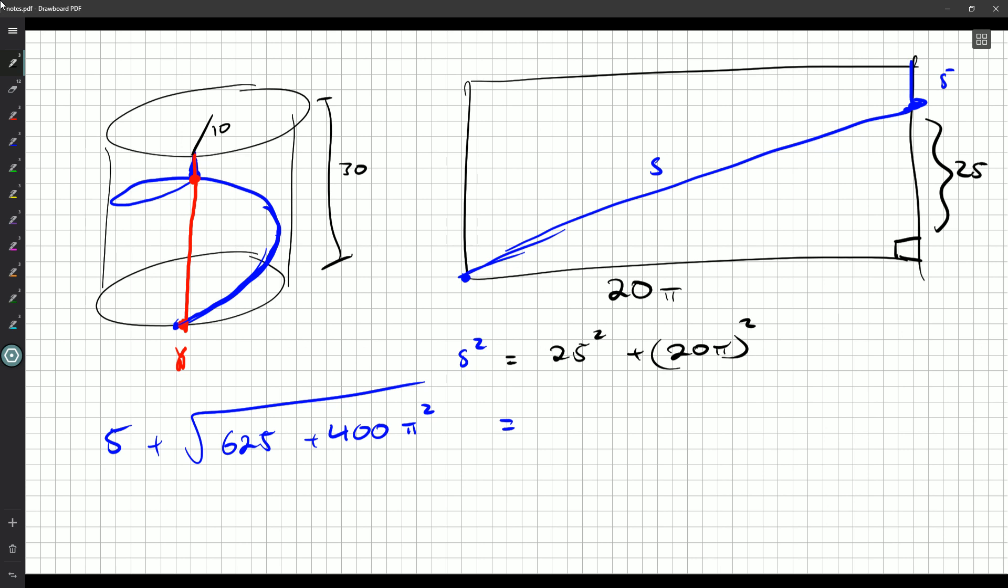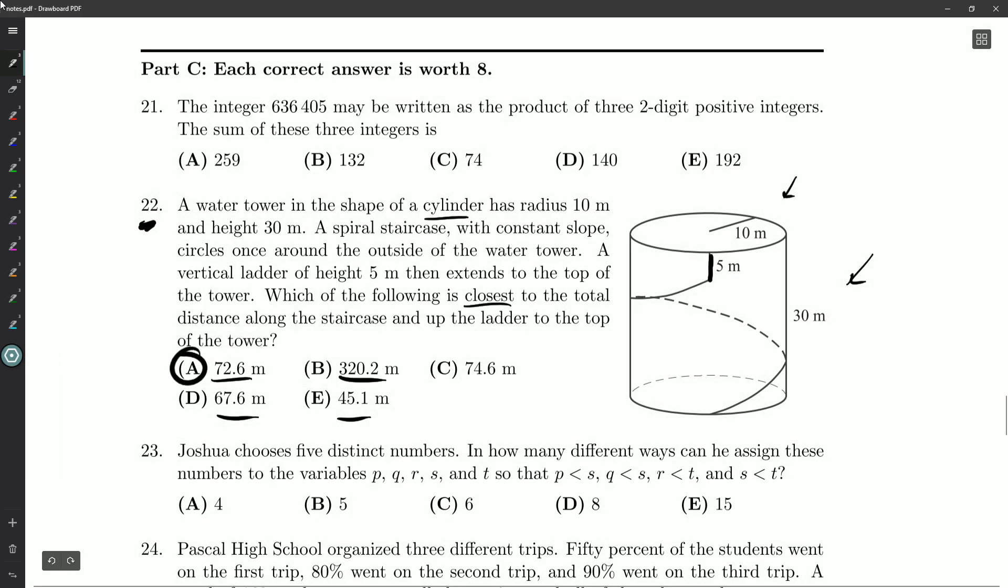So what do we got? 625 and 400. Fortunately, my calculator has a little π button, but you can use 3.14 just fine. So I get about 4,500 for the thing under the square root sign. Square root that, I get 67.6. We don't forget the 5 for the ladder, so 67.62. And we add that on 72.62. And so we're looking for something close to 72.6, and that's going to be answer A.